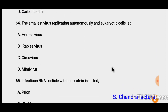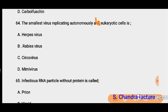Question 64: The smallest virus replicating autonomously in eukaryotic cells is circovirus. So the correct option must be C.